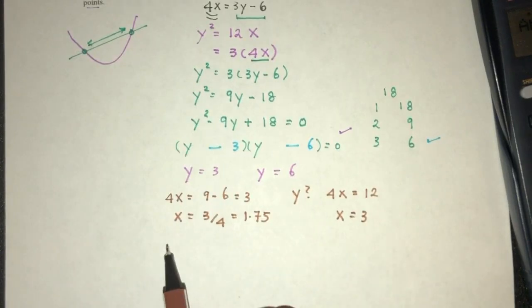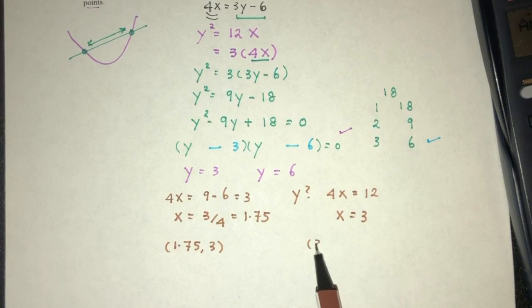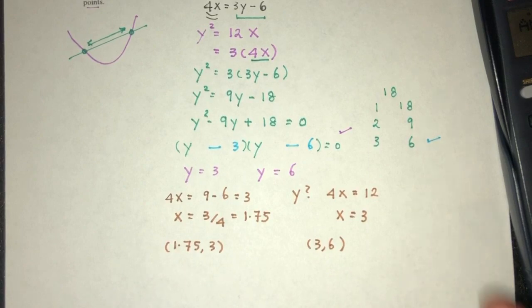So here we have two points. The first point is 1.75 and 3. And then we have 3, 6. So here we have the two points we need. We can just find the distance between them.